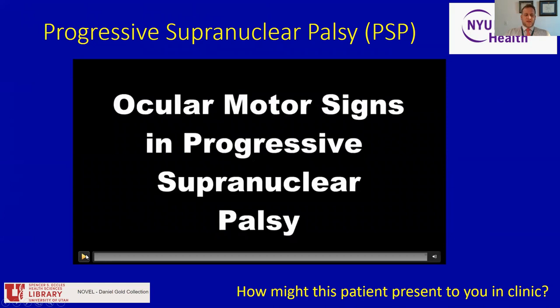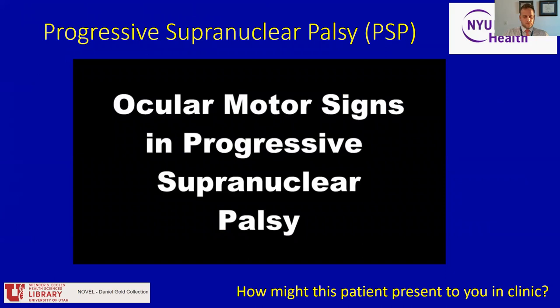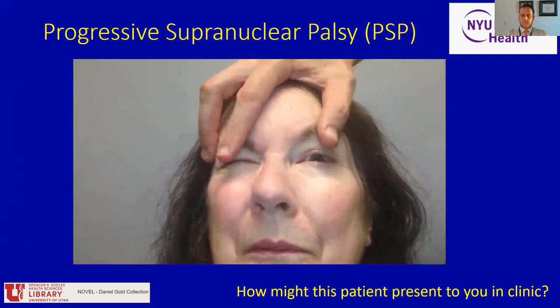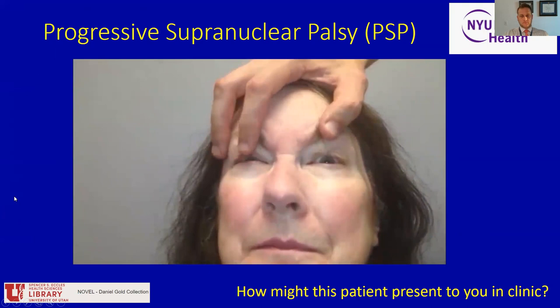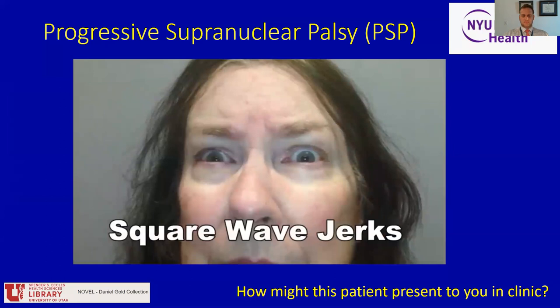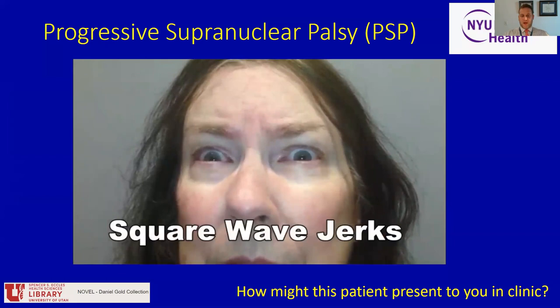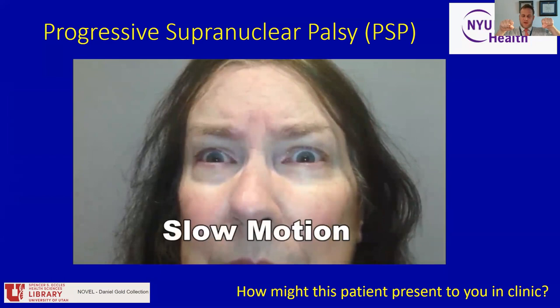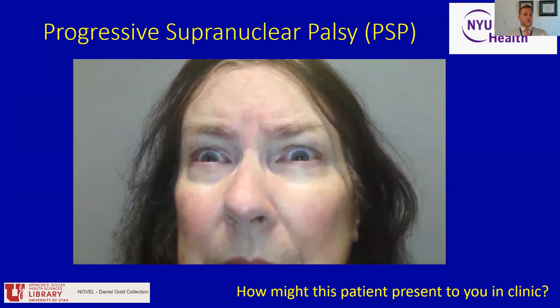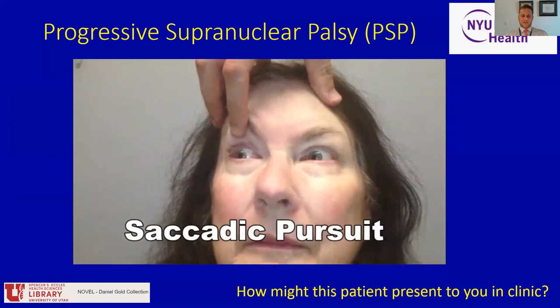Let's look at some of the oculomotor signs in PSP. Here we see limitation in range of vertical gaze that improves with VOR. This individual also has abnormality in primary gaze — when asked to look straight ahead, individuals can have conjugate eye deviation off their target and then back to their target. They typically deviate conjugately to one side and then back, which is termed square-wave jerks. Square-wave jerks can be normal in older individuals but can be increased in disorders like PSP.